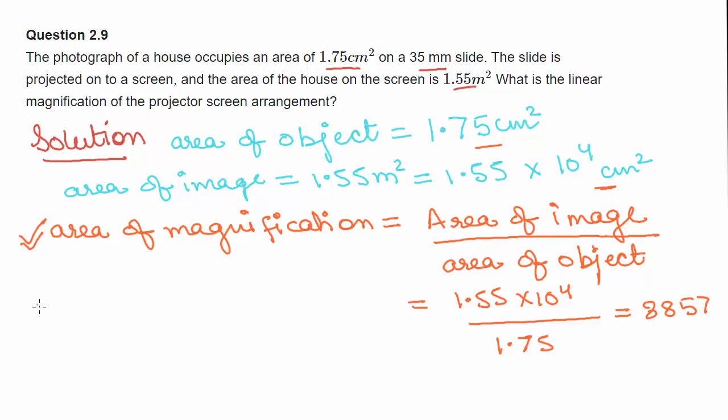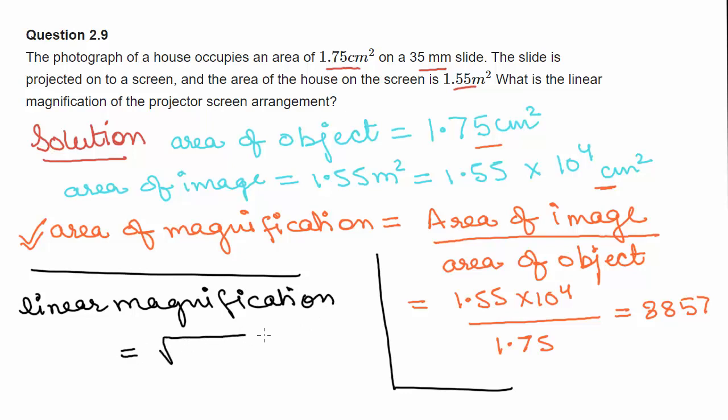Now linear magnification can be found by taking square root of area magnification. So linear magnification is equal to square root of 8857, which is equal to 94.5.